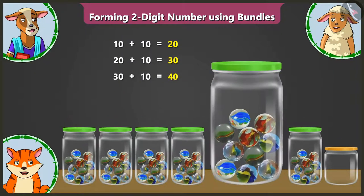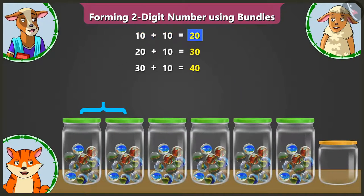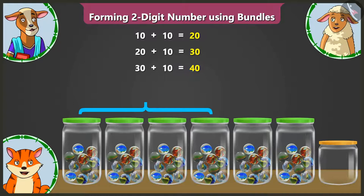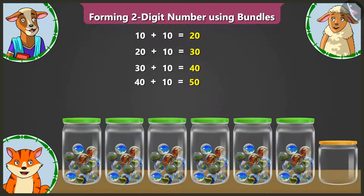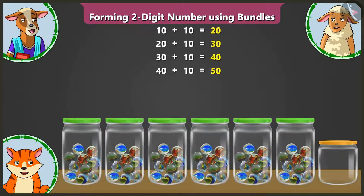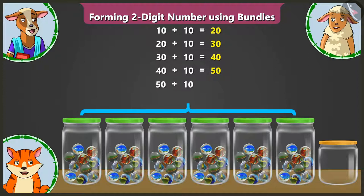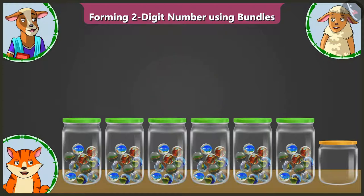This fifth jar also has 10 marbles. This makes it 10 and 10, 20, 20 and 10, 30, 30 and 10, 40, 40 and 10, 50 — 5 groups of 10. The sixth jar also has 10 marbles. This makes it 50 and 10, 60 — 6 groups of 10s.